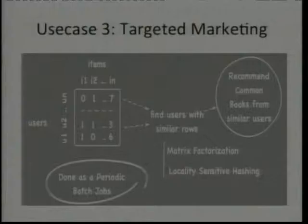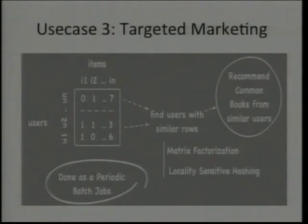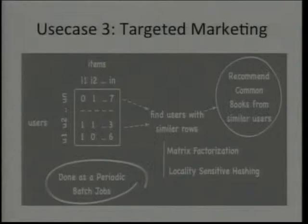The final case is targeted marketing or recommendations — trying to understand what people did and finding what other things they might like. For example, in Amazon about 70% of sales are driven by recommendations. It's a very powerful part of their process.